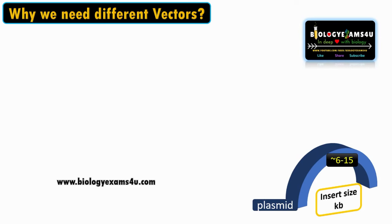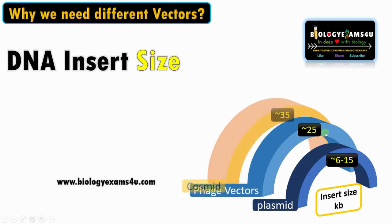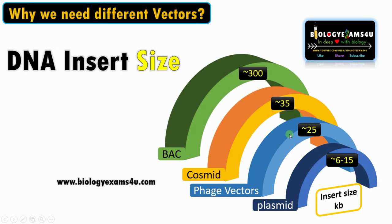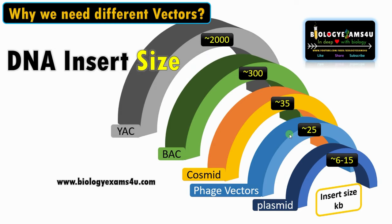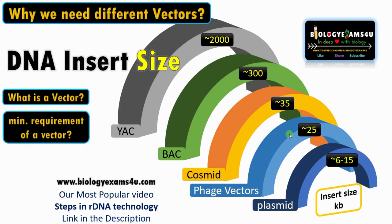Why do we have different kinds of vectors? The prime reason is the DNA insert size. Plasmid is the most common gene cloning vector with an insert size of 6 to 15 kb, accommodating only small DNA fragments. Phage vectors can accommodate up to 25 kb, cosmid approximately 35 kb, BAC up to 300 kb, and YAC can accommodate 2000 kb. The prime reason for having different types of vectors is to accommodate large DNA fragments for different scientific procedures like genome sequencing.